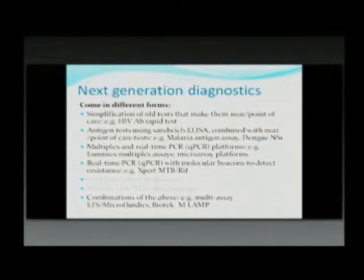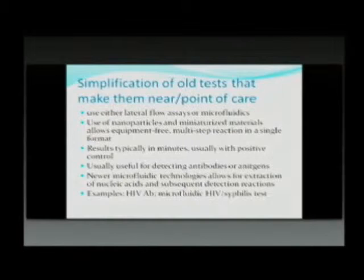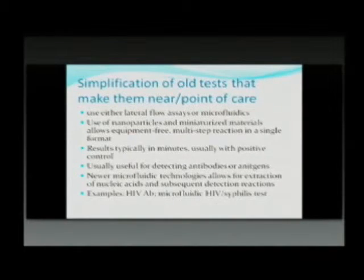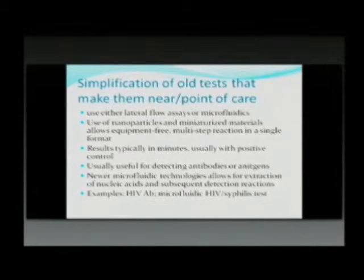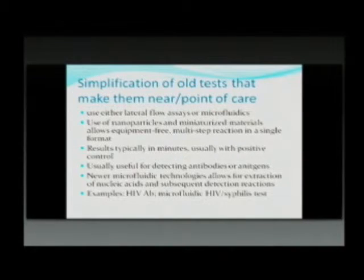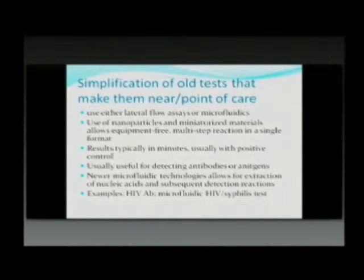The first category is simplifying old tests to make them near or point of care, using techniques called lateral flow assays or microfluidics. These use nanoparticles and miniaturized materials to simulate what big equipment does in a very small space, requiring very little sample. Probably the oldest point-of-care test you can think of is a pregnancy test, which is actually a lateral flow assay. For infectious diseases, we now use it routinely for HIV — you can do an HIV test in about 20 minutes, similar to a pregnancy test. It is usually useful for detecting either antibodies or antigens.